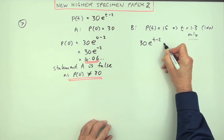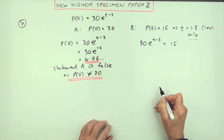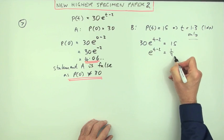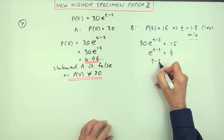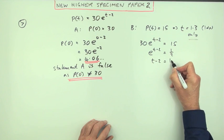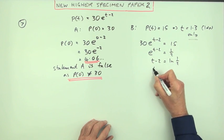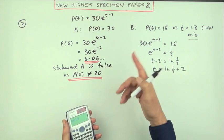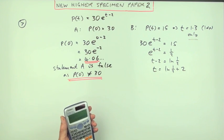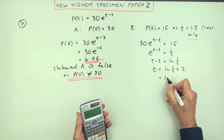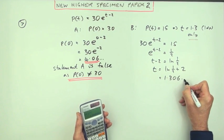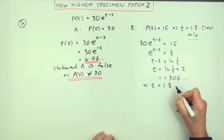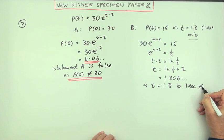If 30e to the t minus 2 has to give you 15, then e to the t minus 2 would be equal to a half. So t minus 2 would be inverse of e is ln a half, so t is going to be ln a half plus 2. So as before you just type that in and you get 1.306 etc. So that means t equals 1.3 to 1 decimal place.